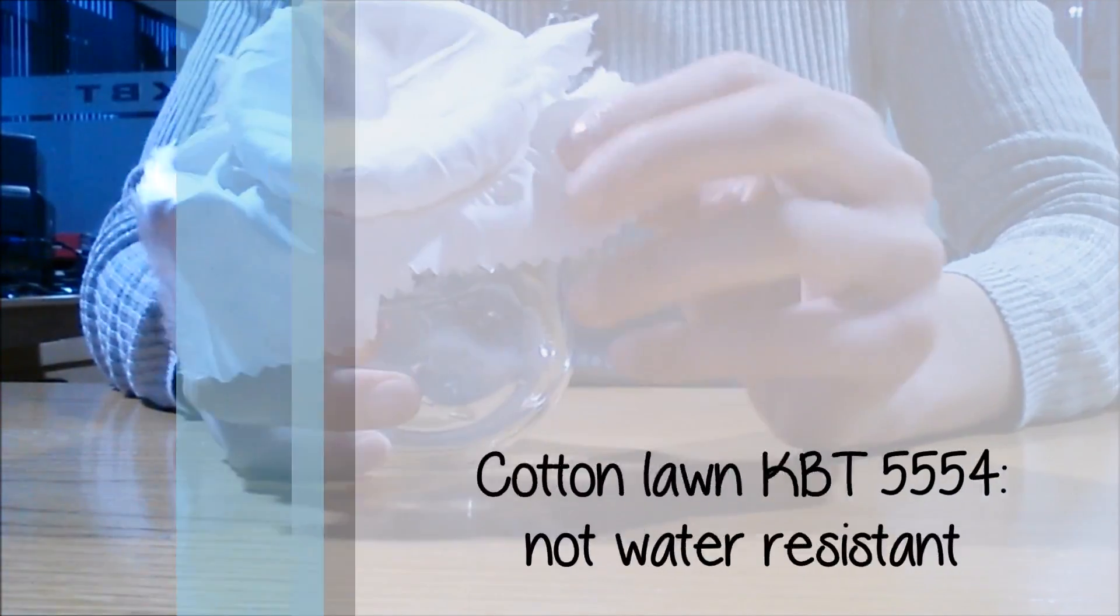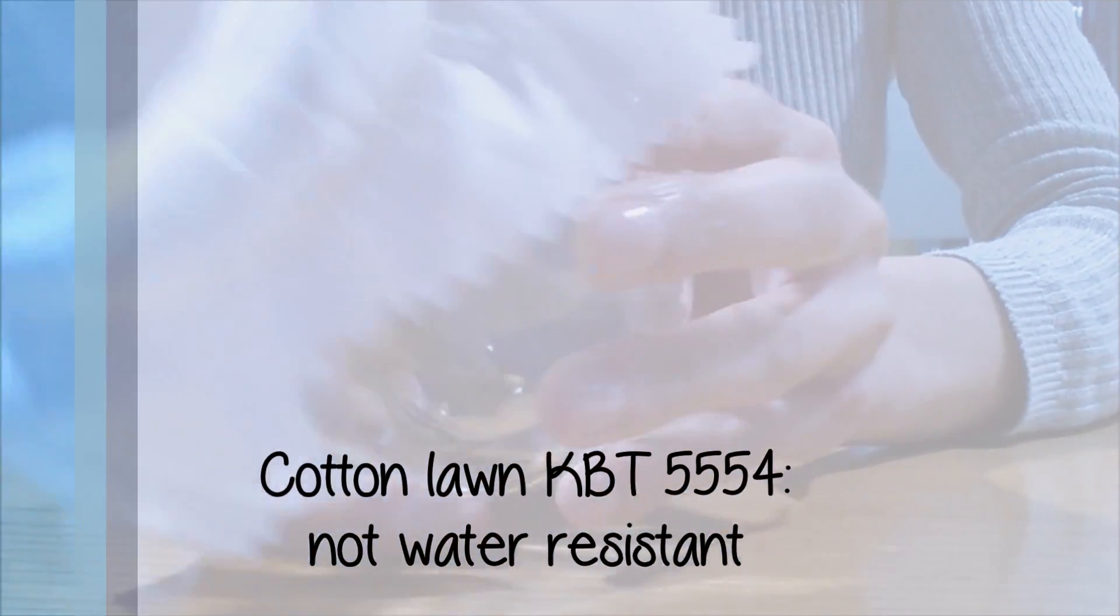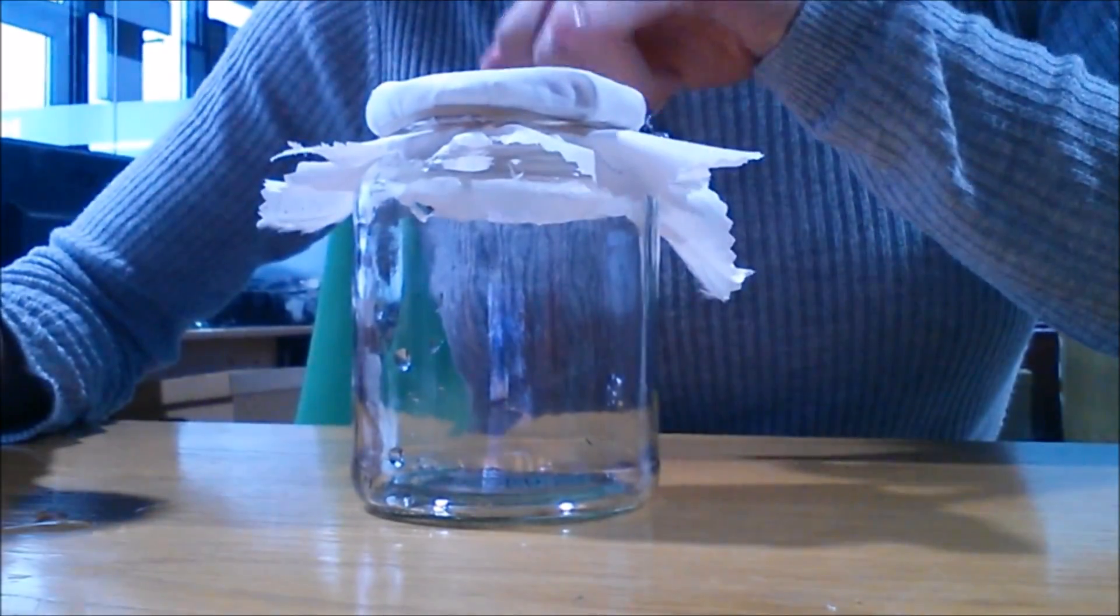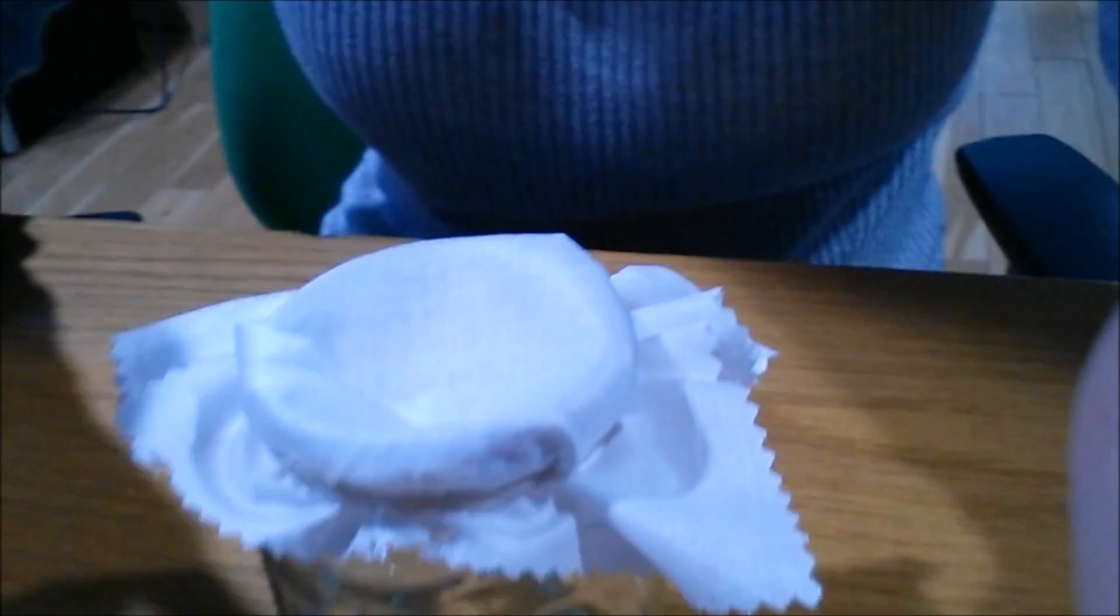The fabric shown here is cotton lawn and is not waterproof, to demonstrate how easily water can pass through a fabric. This particular cotton lawn is lightweight with a supple, silky feel and is used for summer dresses and blouses.